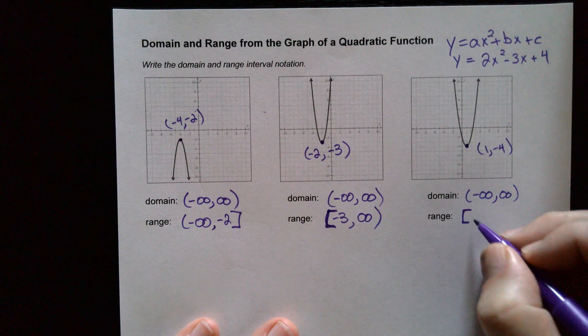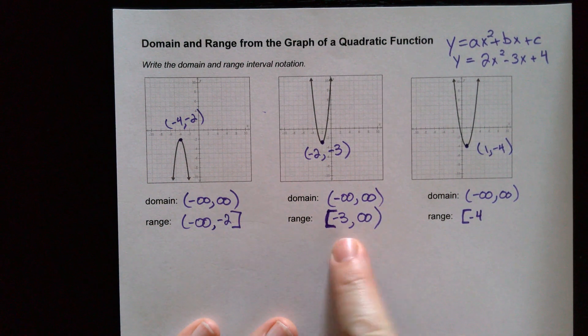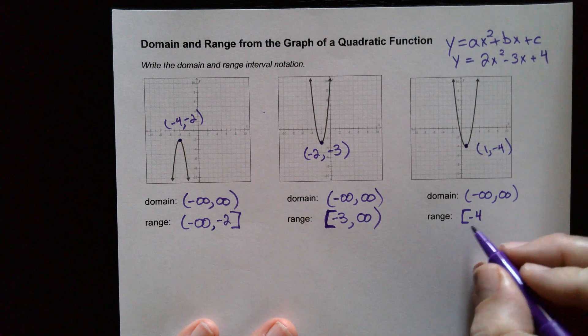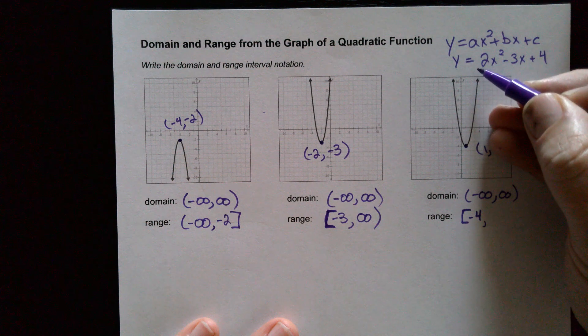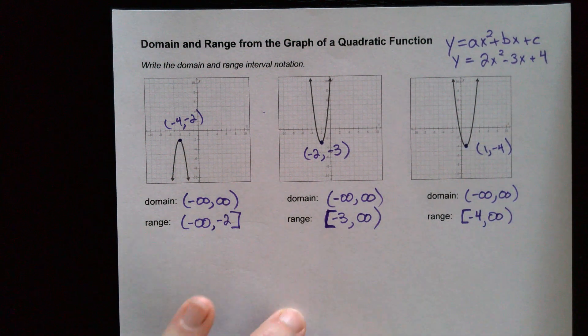My mistake. I do need a bracket here as well. These are always going to be brackets, unless otherwise stated, unless there's like an open dot on the graph somewhere. The numbers need brackets. Infinity needs parentheses. Okay, so bracket negative 4, that's the lowest point. And how high does it go? Infinity. And that's how you found the domain and range from the graph of a quadratic function.